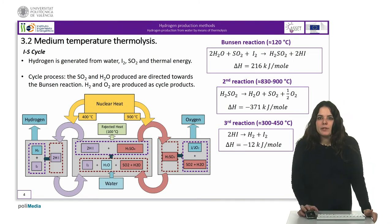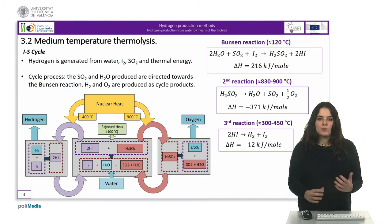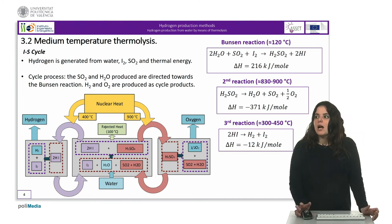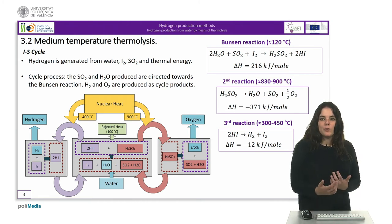In the medium temperature thermolysis we can identify two main processes. The first is the I-S cycle where hydrogen is generated from water, iodine, SO2, and thermal energy. It requires two thermal levels: one at about 850°C to decompose sulfuric acid and another at about 400°C for hydrogen iodide.